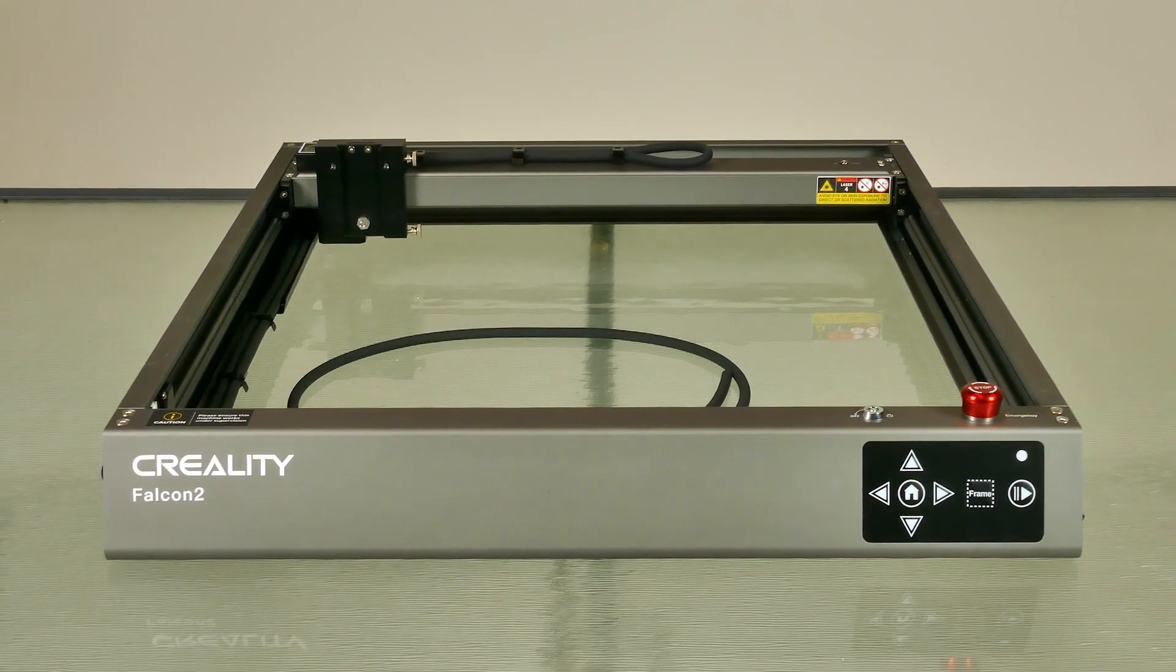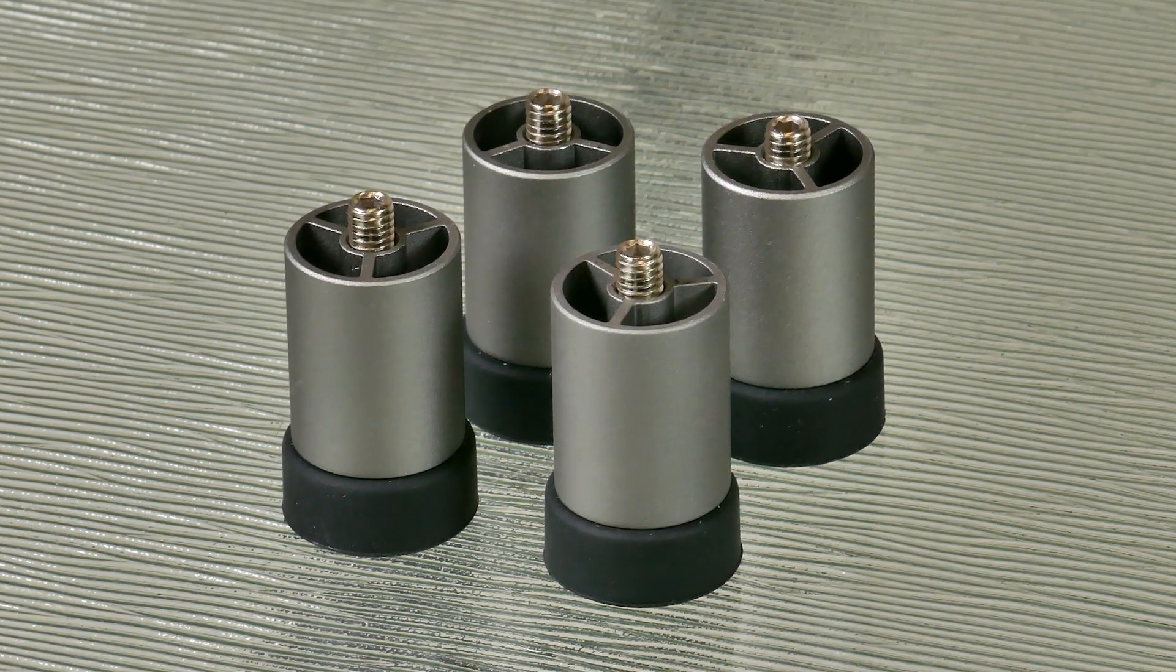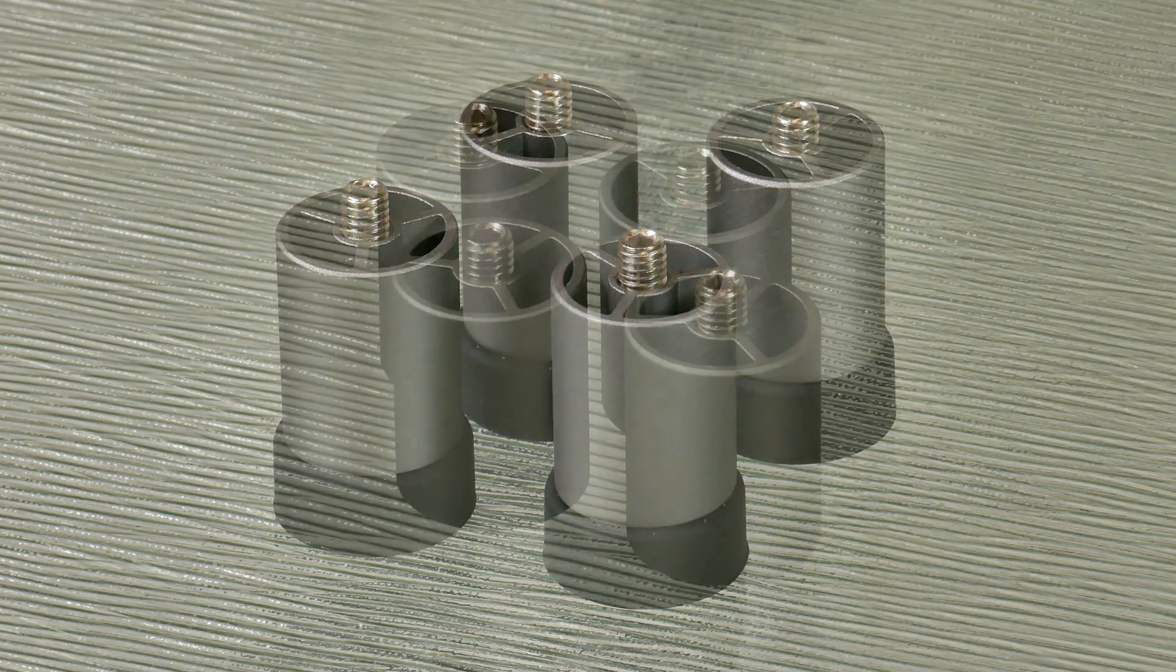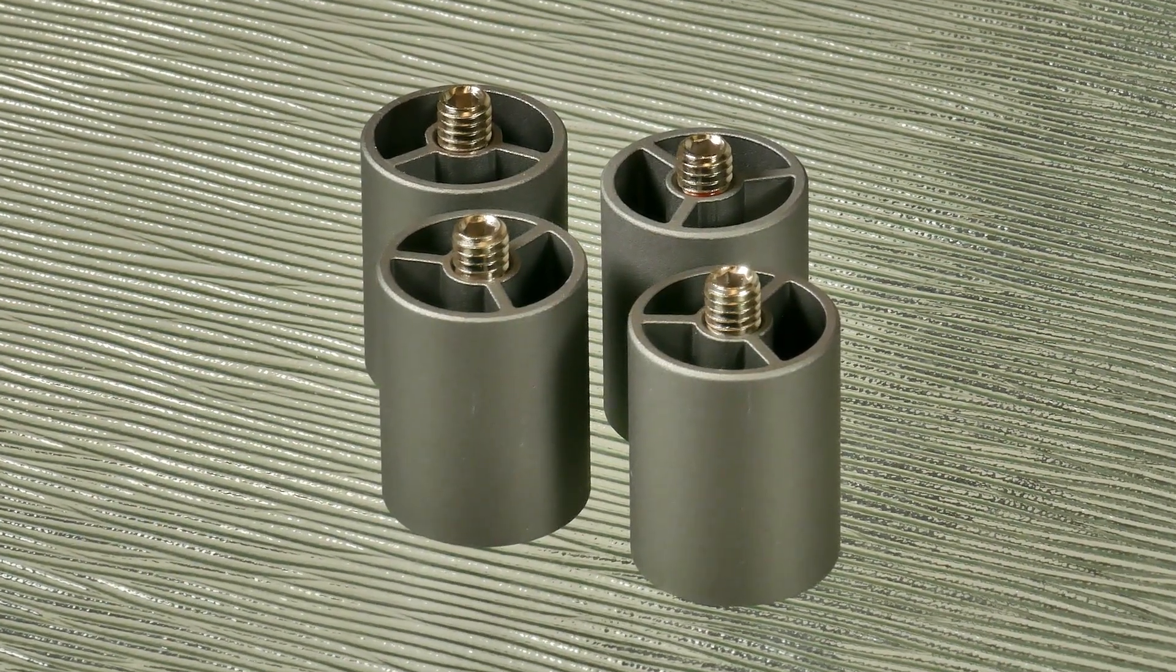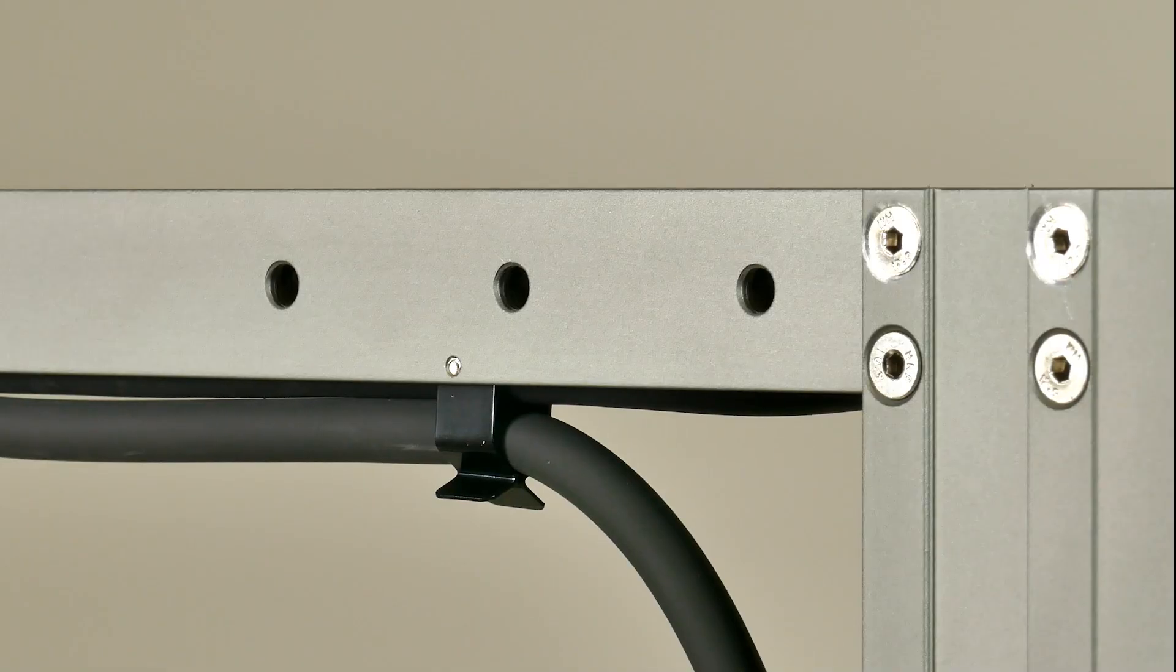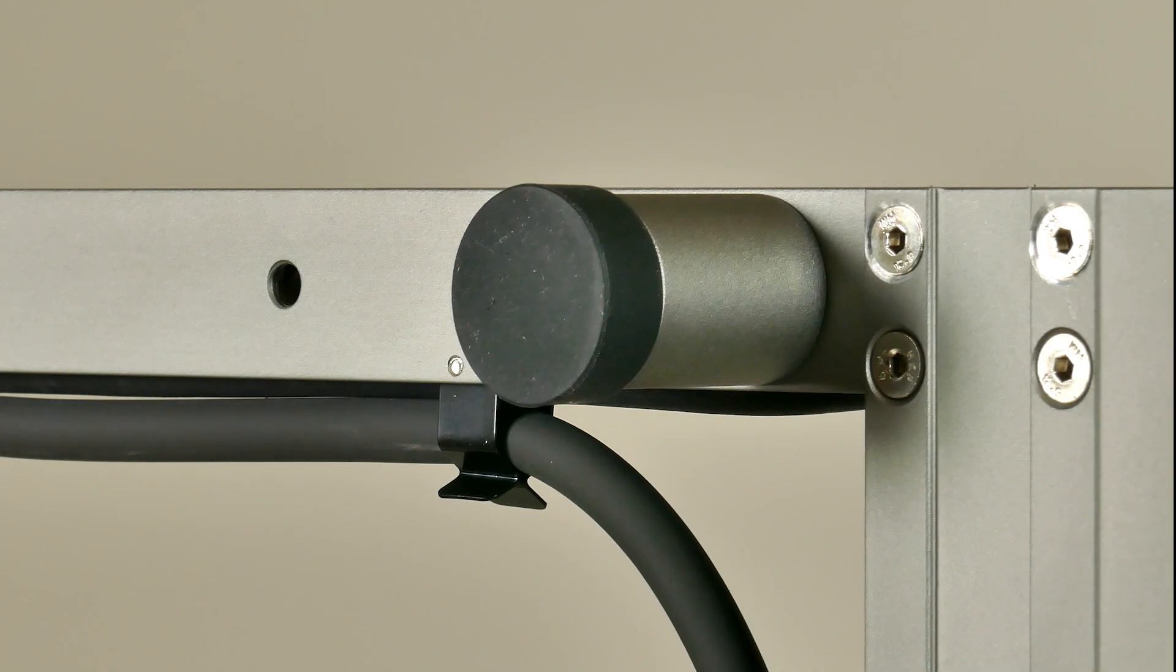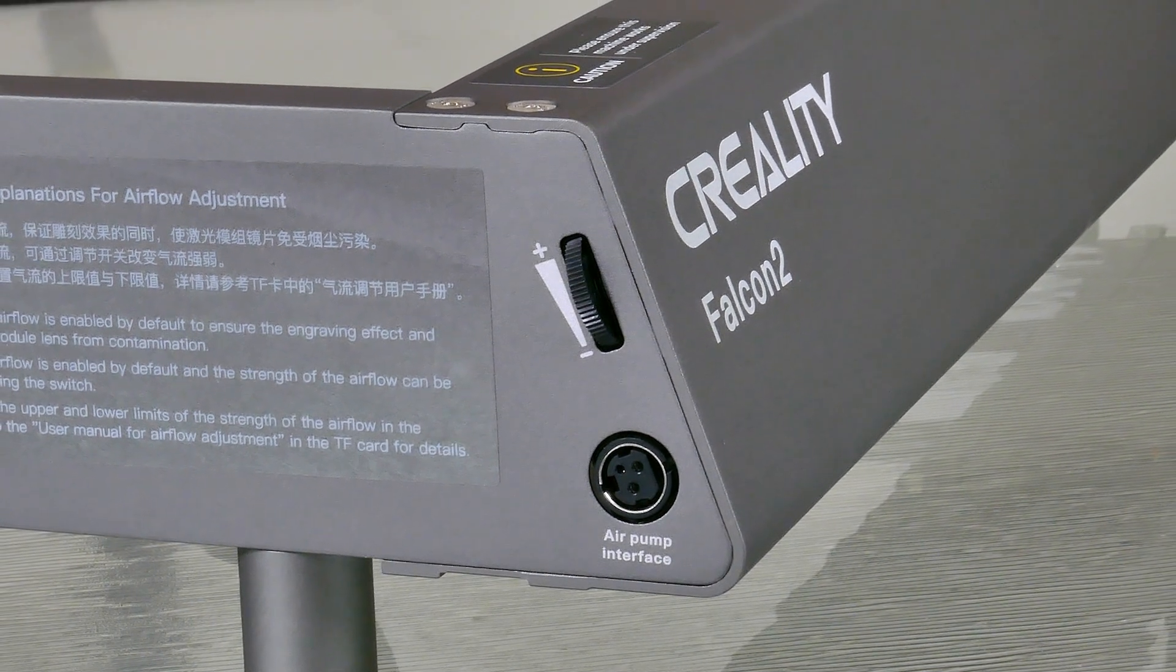The frame comes with these four non-slip feet and also you get some extenders as well. If you need any more they are available from their website just in case you need it for some thicker material. The sturdy aluminum frame comes with three holes in each corner just to give you a variety of sizes to choose from. On the left side of the frame is the connection for the air pump as well as the adjustable airflow controller.